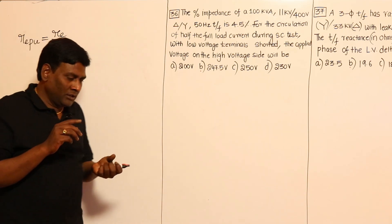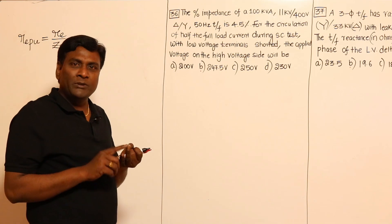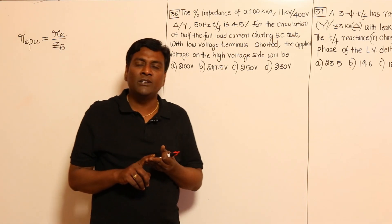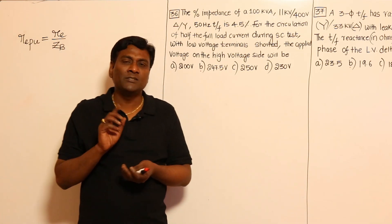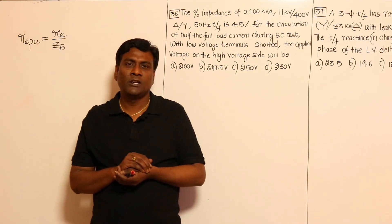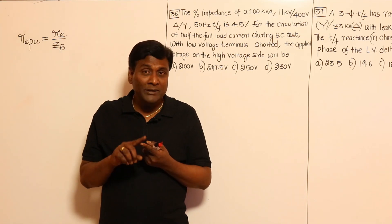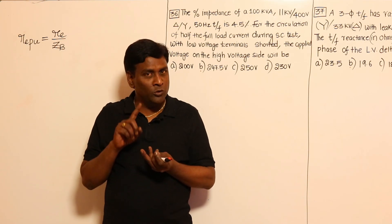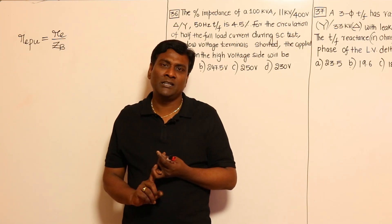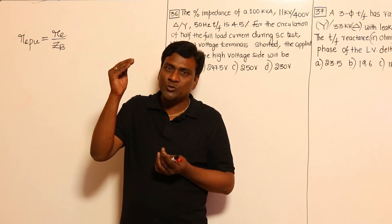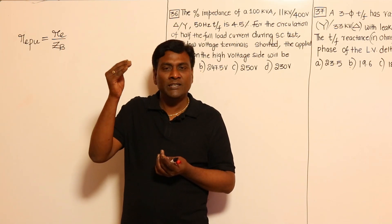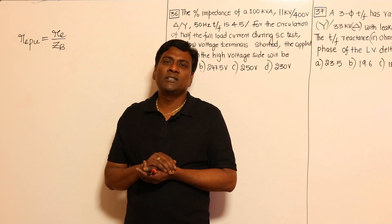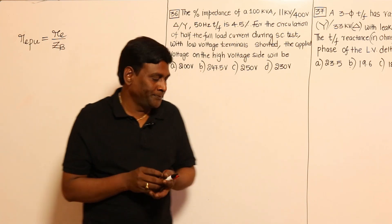For example, S_base, P_base, Q_base will not be there — only S_base will be there. Similarly, R_base, X_base, Z_base — only Z_base will be there, because actual value in ohms divided by base value in ohms.